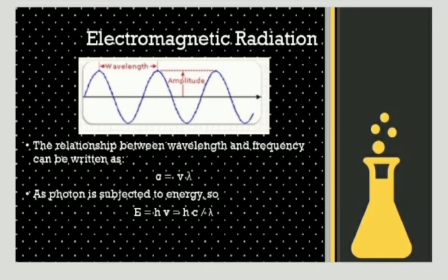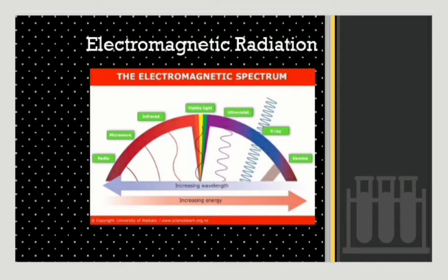Under the electromagnetic radiation topic, we will discuss the main principle of spectroscopy and the interaction of EMR with matter. Here is a simple diagram of the electromagnetic spectrum which shows different wavelengths of infrared rays, visible light, ultraviolet, and different energy levels. As the wavelength increases, the energy decreases, or conversely, a decrease in wavelength corresponds to an increase in energy.